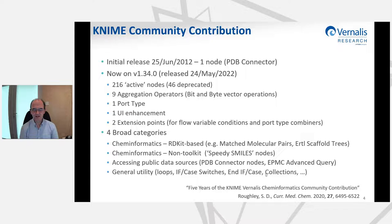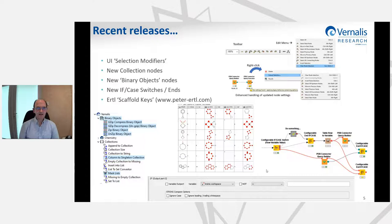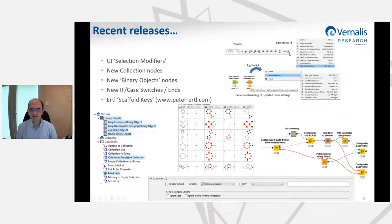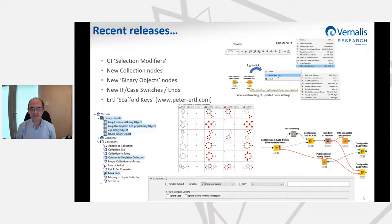I'm just going to talk briefly about some recent releases. We added user interface selection modifiers that appear in the workflow editor toolbar, sandwiched between the workflow zoom and the familiar layout buttons. They're also in the edit menu and context menu. They allow you to select all downstream nodes from a current selection or all nodes that connect to selected nodes in the editor — quite useful for disentangling messy workflows and converting them to meta nodes.